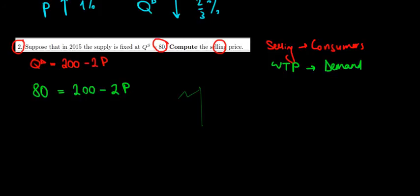The demand function is Q = 200 - 2P. So if we take the -2P to the left side, it becomes 2P, and we take 80 to the right side, it becomes 200 - 80 = 120.